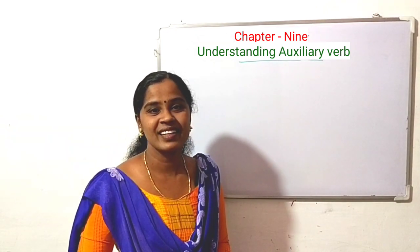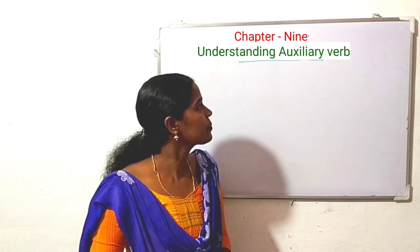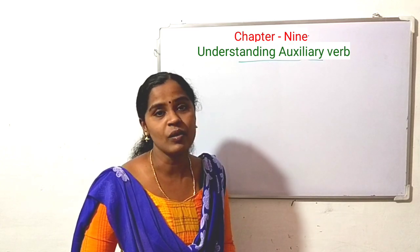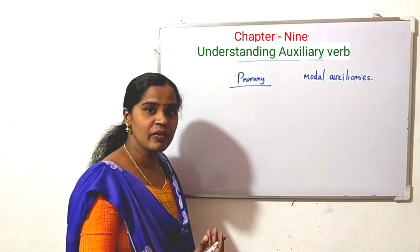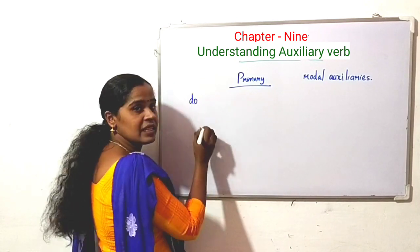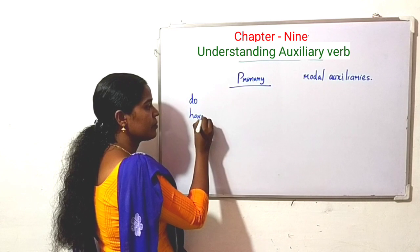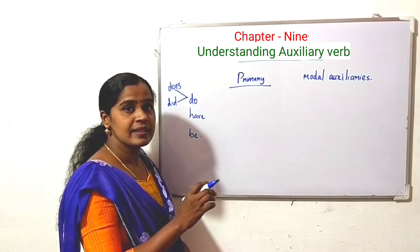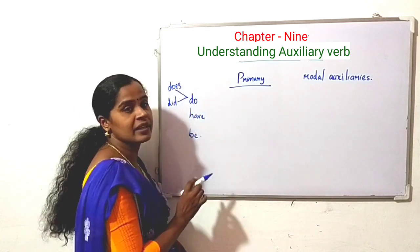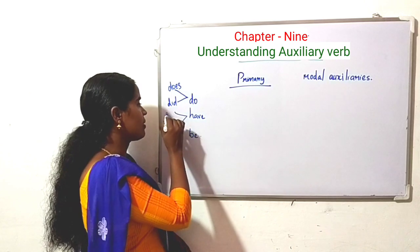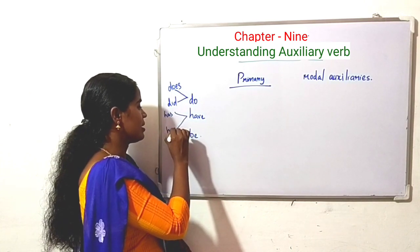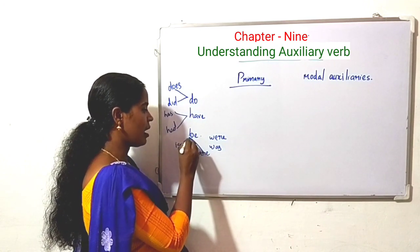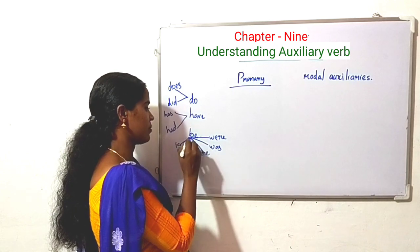At first we can see the classifications of auxiliaries. Auxiliaries are broadly divided into primary auxiliary and modal auxiliary. Primary auxiliary is again divided into do auxiliary, have auxiliary, and be auxiliaries. Do auxiliaries are: do, does, and did. Have auxiliaries are: has, had, and have. Be auxiliaries are: be, is, am, are, was, were.